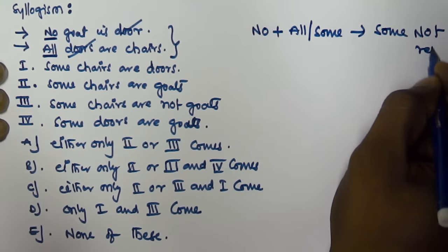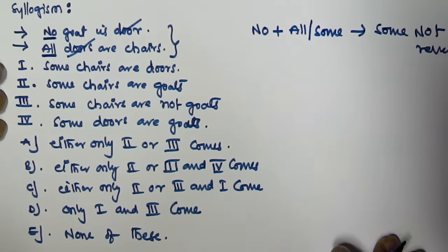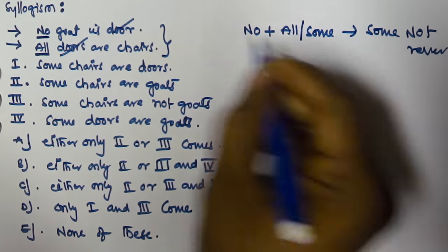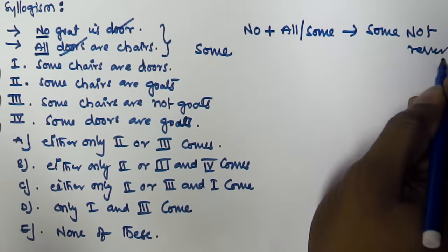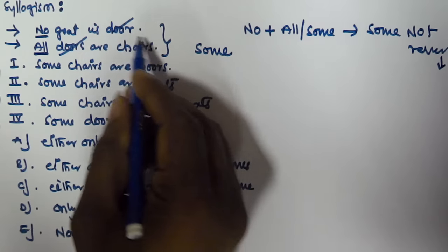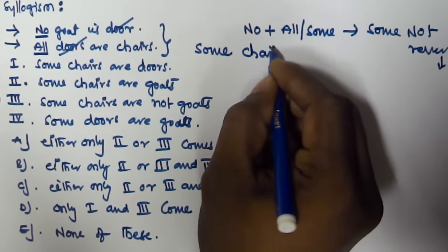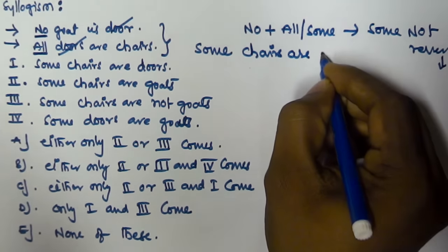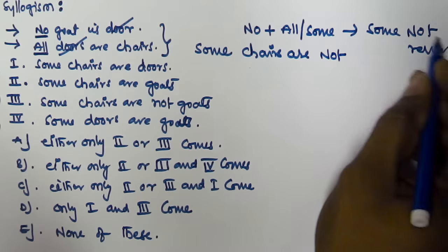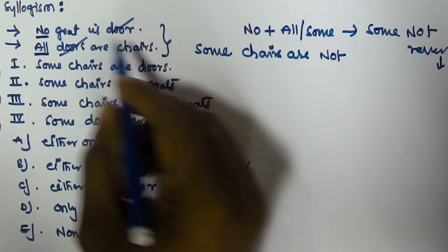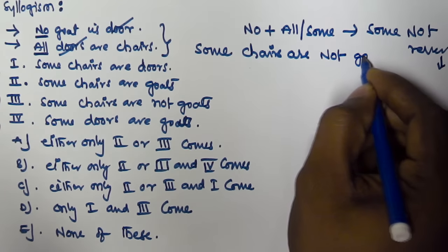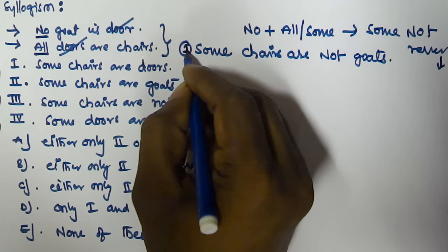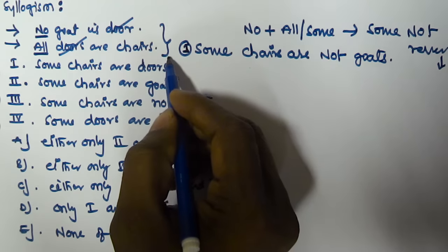Using the 'Some Not Reversed' rule: since No + All applies, the result starts with 'some.' We reverse the concept, so the predicate of the second statement becomes the subject. We get: some chairs are not goats. This is our first derivation.